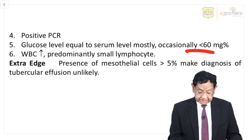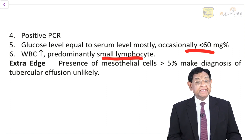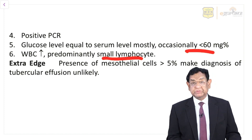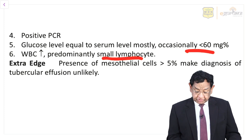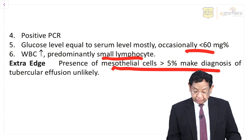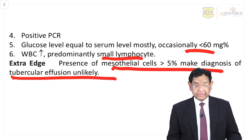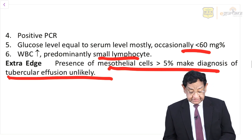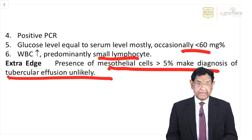WBC count is increased but predominantly small lymphocytes — that means mainly lymphocytosis occurs. A very, very important point: presence of mesothelial cells more than 5% makes the diagnosis of tubercular effusion unlikely. This is a very, very important line.